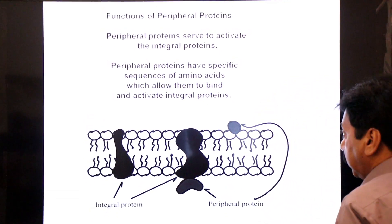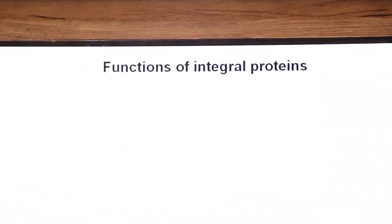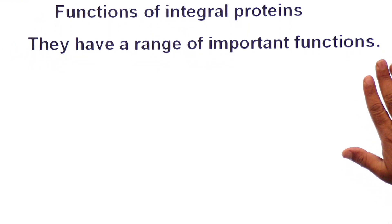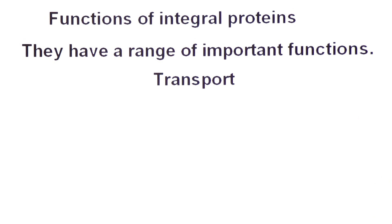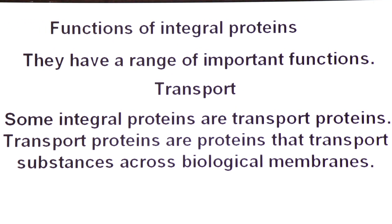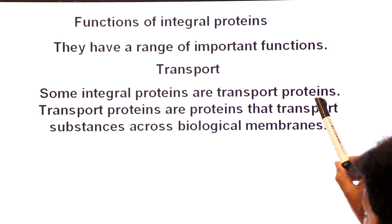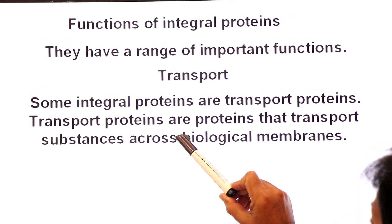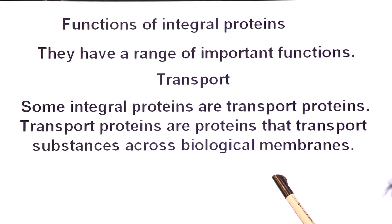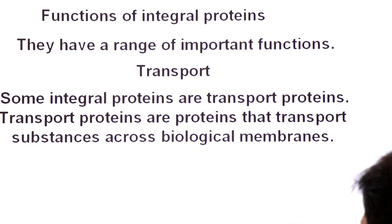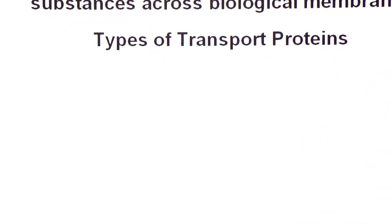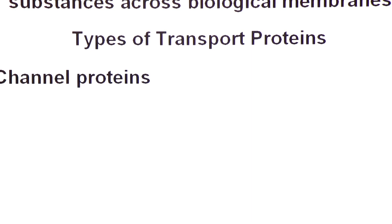Now the functions of integral proteins — they have a range of important functions. First function is transport: they help in the transport of glucose, sodium, potassium, and other solutes. Some integral proteins are transport proteins — proteins that transport substances across biological membranes. There are two types of transport proteins: channel proteins and carrier proteins.